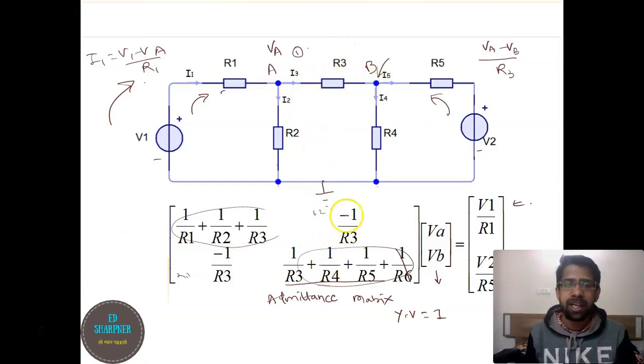So we will just put negative sign and put it in the positions 1,2 and 2,1. So this is how you can form the matrix.